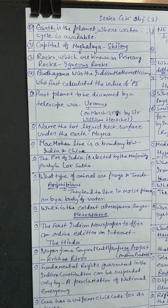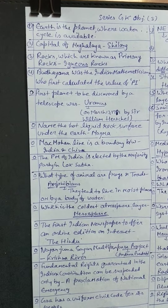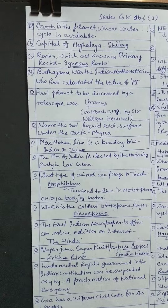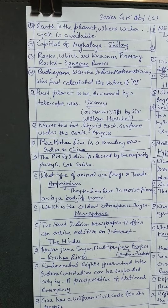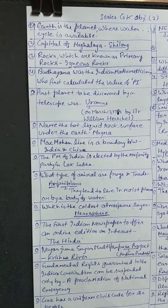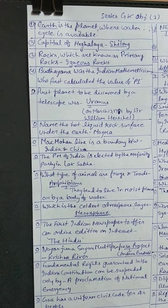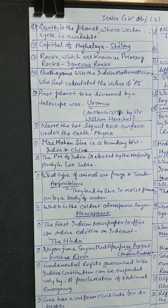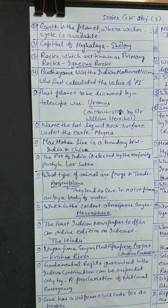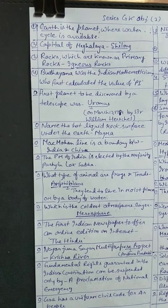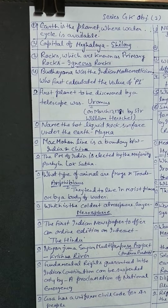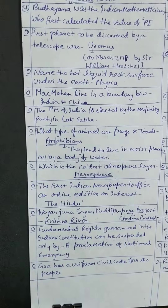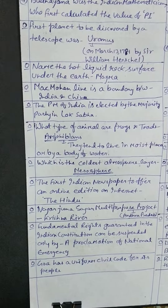The first planet to be discovered by a telescope was Uranus, on March 13, 1781, by Sir William Herschel. The name for the hot liquid rock beneath the earth's surface is magma.